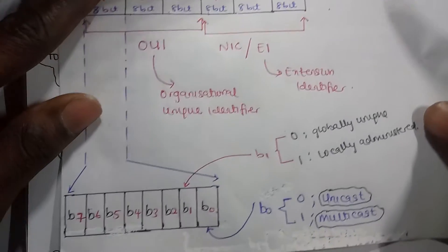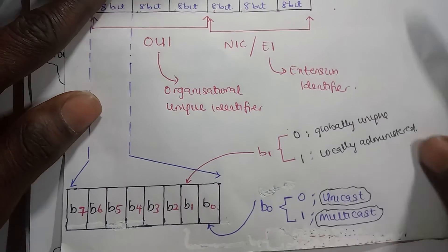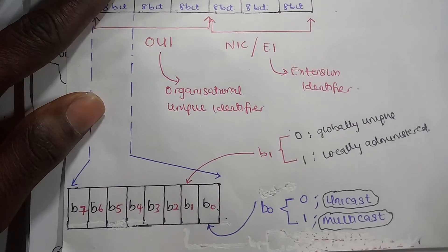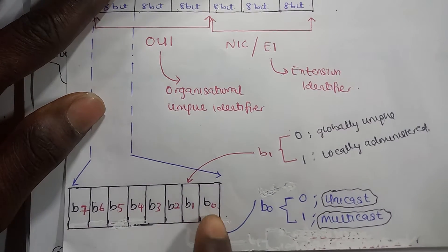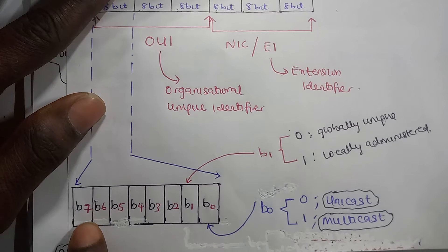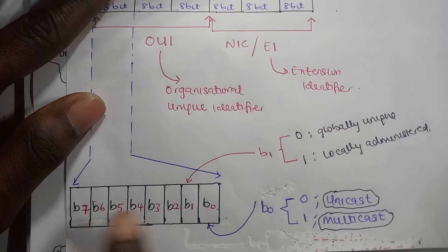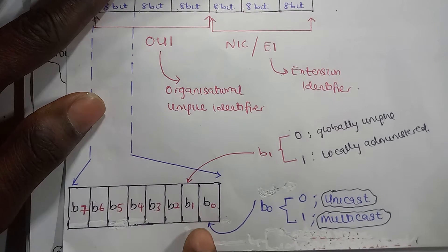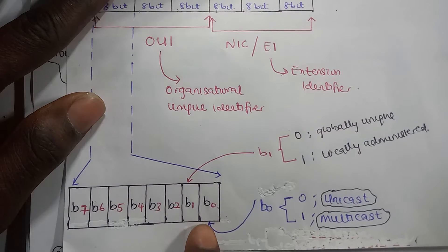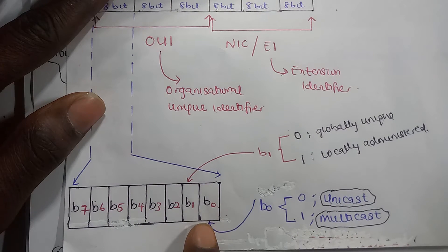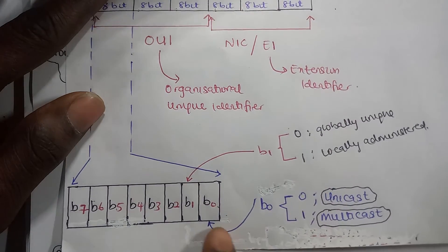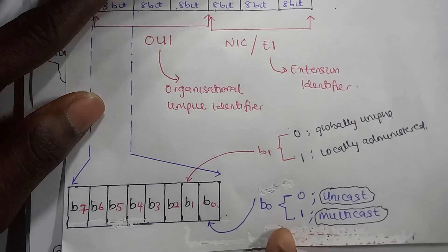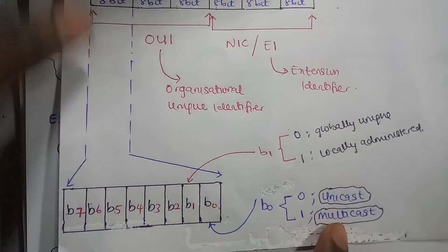If we zoom in, we can see, as we discussed previously, that it consists of 8 bits. This is the most significant bit, and this is the least significant bit. If B0 is 0, it is unicast. If B0 is 1, it is multicast.